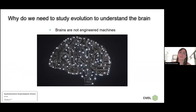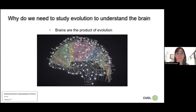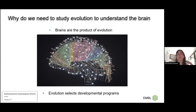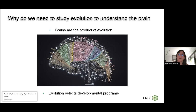I would like to start with an analogy used before by Paul Seck and Maria Toskas, which illustrates very well why we need to study evolution to truly understand the brain. Brains are not engineered machines — they are the product of an evolutionary process. Understanding that evolution is important because biological systems are constructed very differently from how human engineers build artificial systems.